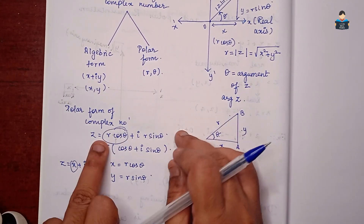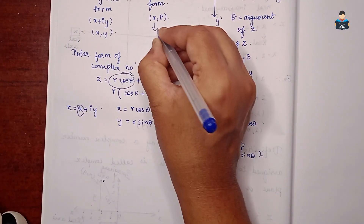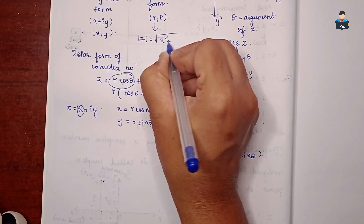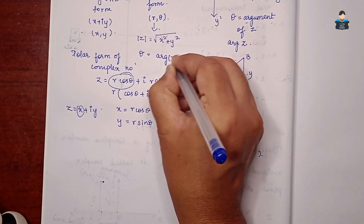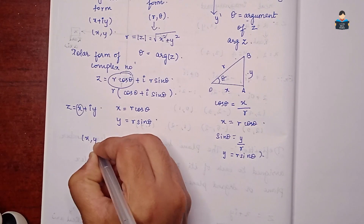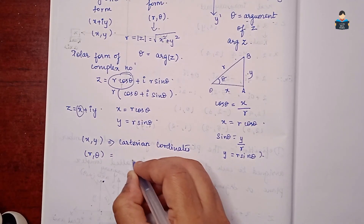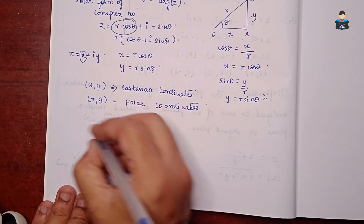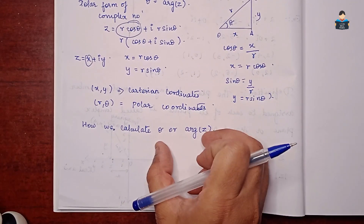To solve for the polar form: r equals modulus of Z, which is square root of x squared plus y squared. Theta equals arg of Z. The coordinates (x, y) are Cartesian coordinates, and (r, theta) are polar coordinates. To calculate theta, step 1 is to find which quadrant the complex number lies in — there are 4 quadrants.